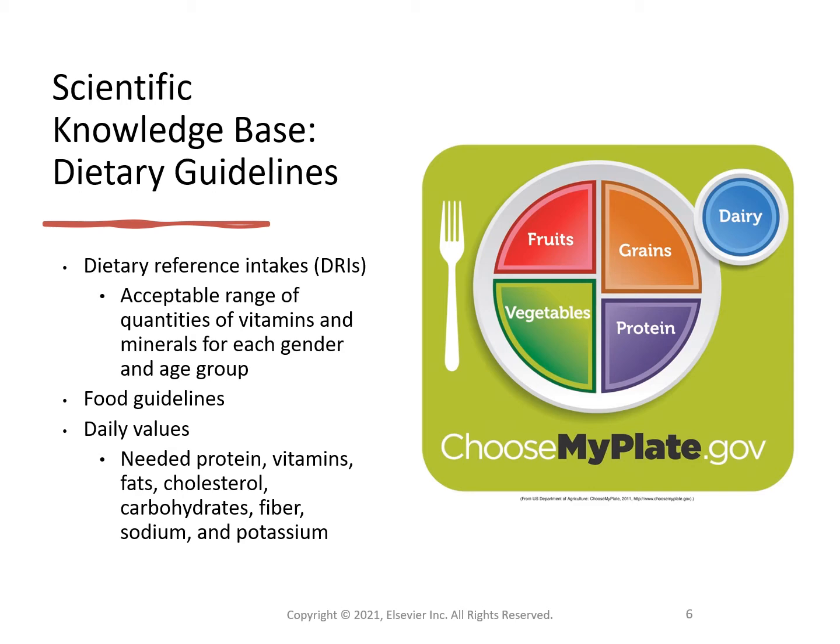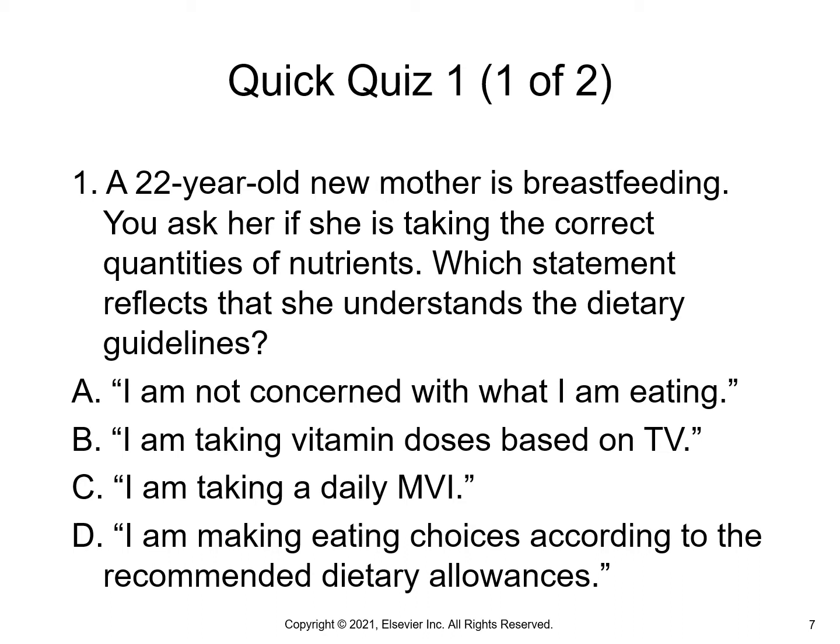Quiz question: A 22-year-old new mother is breastfeeding. You ask her if she is taking the correct quantity of nutrients. Which statement reflects that she understands the dietary guidelines? A: I am not concerned with what I'm eating. B: I am taking vitamin doses based on TV. C: I am taking my daily multivitamin. D: I am making eating choices according to the recommended dietary allowances. The most appropriate answer is D. We do want her to take a daily vitamin, but first and foremost, we want her to make sure she is eating a good diet for herself and baby.